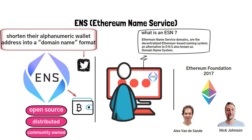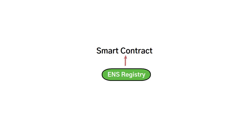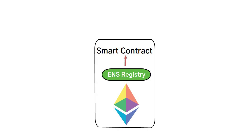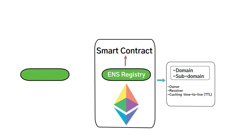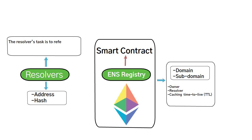At its core, ENS comprises two main components. First is the ENS registry, which lives in a smart contract running on the Ethereum blockchain, and has a record of all domains and subdomains, detailing the owner, resolver, and caching time-to-live for all records under that domain. The second important component are the resolvers, which are responsible for translating ENS domain names into the underlying referenced address or hash. The resolver's task is to reference the domain name and then respond with the resource wallet address.